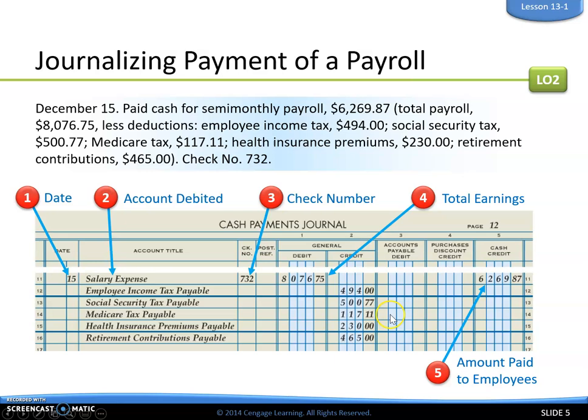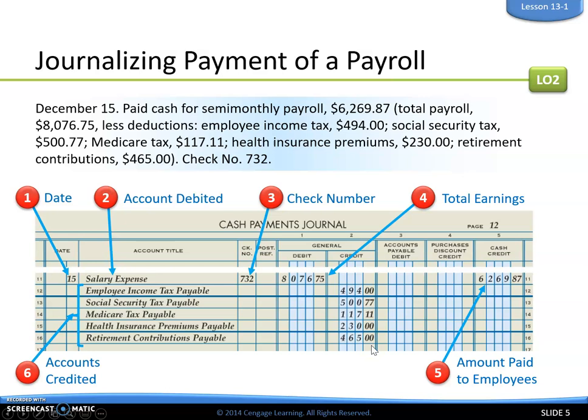Then we break it down into all of our credits for our deductions. When we look at this transaction, we're paying cash to employees, but really what we are doing is putting it into a payroll account. These credits to the liabilities — we have not paid these out yet. We are setting them aside; this is all money going to the government, so right now we are holding it, not paying it out.